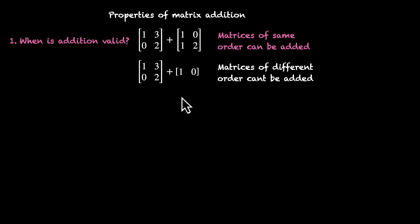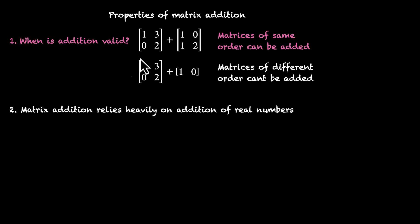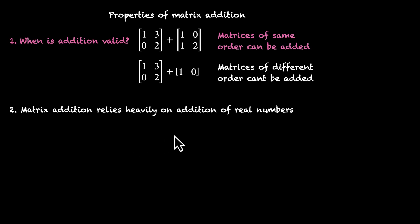Now let's talk about properties of matrix addition. One thing to note, and you'll see it over and over again, is that matrix addition relies very heavily on addition of real numbers. So wherever you see a property working, if you open the hood, you'll see that it works because that property works for real numbers as well.